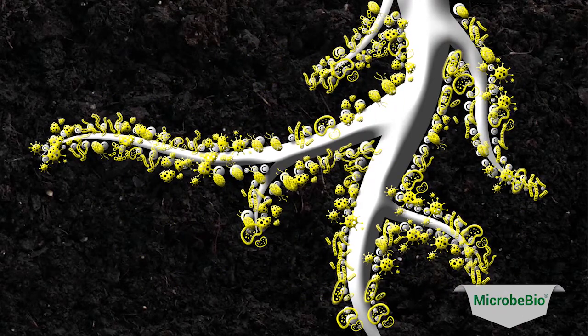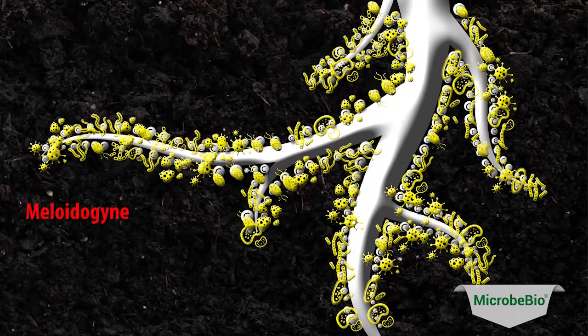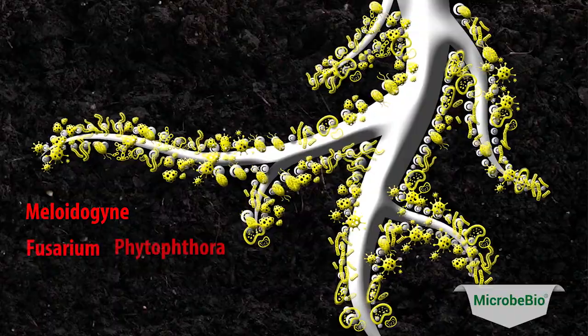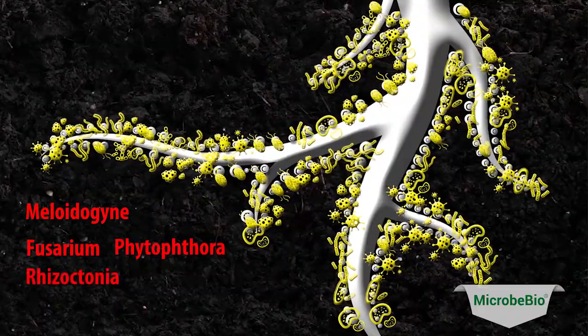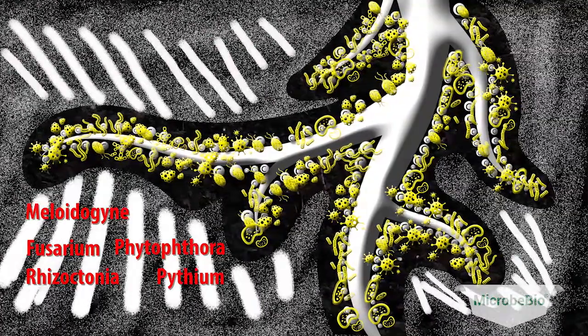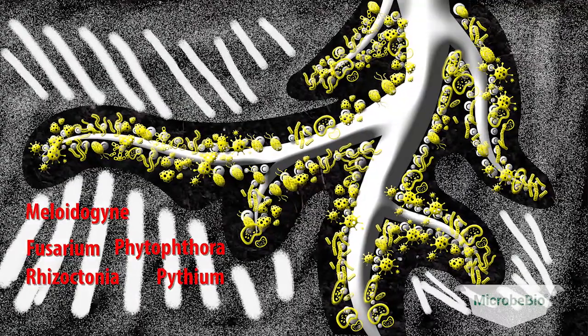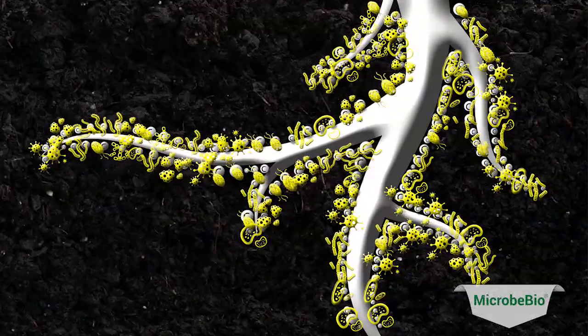A symbiotic relationship is formed between the mycorrhizal fungi and the plant's root system. Beneficial microbes are dedicated to protecting the plant roots against unfavorable conditions, diseases, and pests, all while improving the very structure of the soil and increasing organic matter.